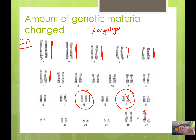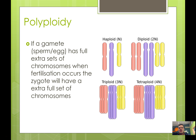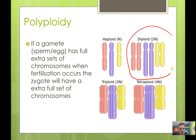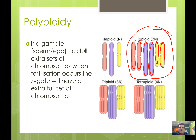Polyploidy is when we change whole sets of chromosomes — if a gamete or sperm has a full extra set, this is polyploidy. Humans are normally diploid, 2N, with one set from mum and one set from dad. If we had one less set we'd be haploid; three sets is triploid; four is tetraploid, and so on. That's called polyploidy.